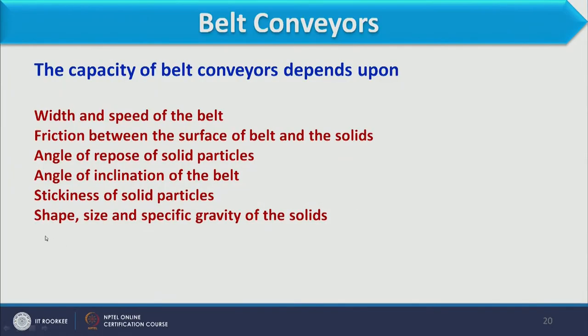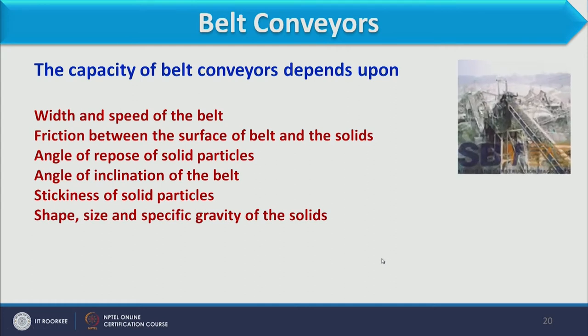Additional factors affecting capacity include the angle of inclination of the belt, stickiness of the solid material, and the shape, size, and specific gravity of the solid. All these factors must be considered when determining the capacity of the belt conveyor.